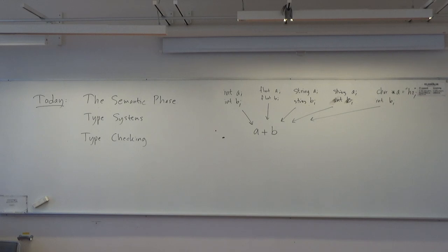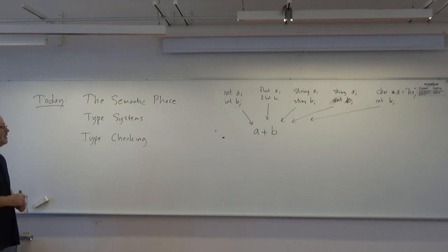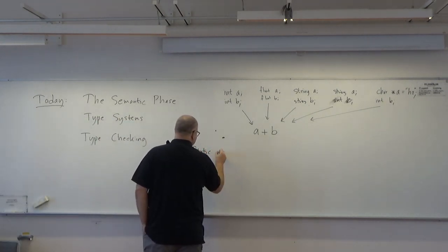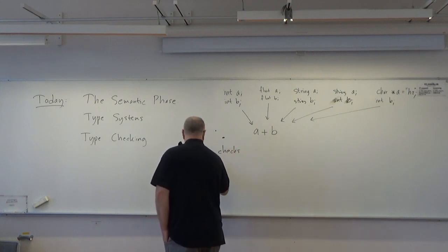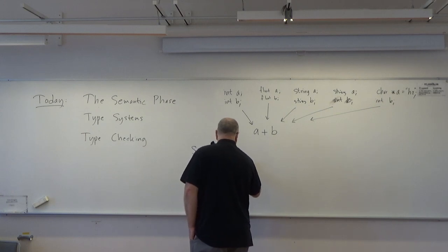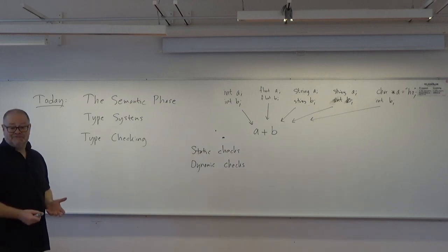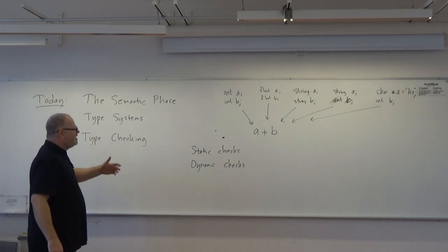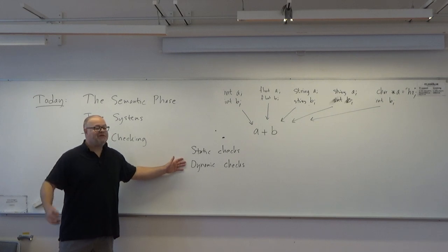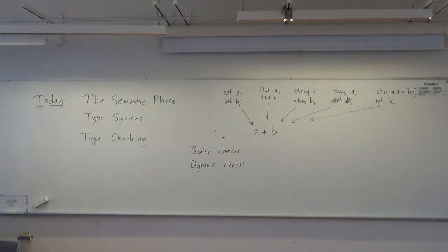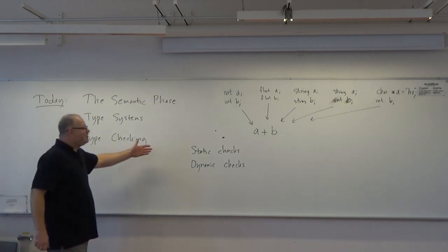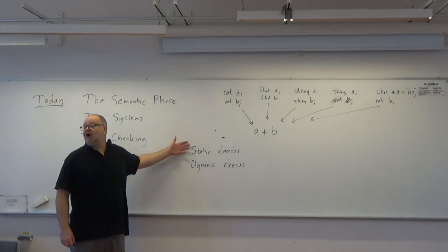Since we're talking about type checking, let's say something about various types of checking — not type checking, but types of checking. You have static checks and dynamic checks. In the context of compilers, static means things we do in the compilation phase, when the program is not running yet. Dynamic things are things that happen when the program runs, at execution time instead of compile time.